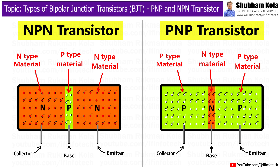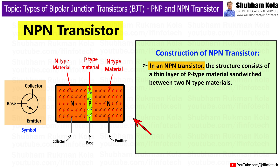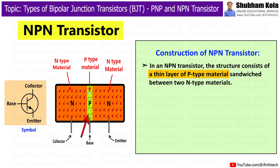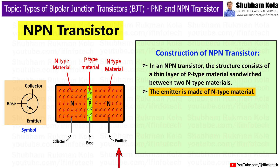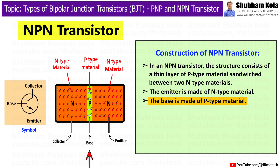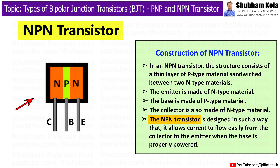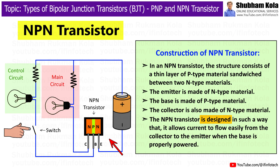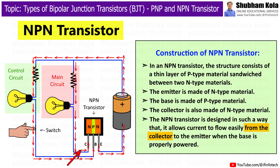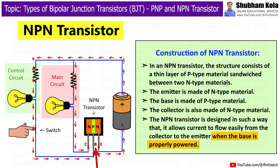Now let's look at the construction of NPN and PNP transistors. In an NPN transistor, the structure consists of a thin layer of P-type material sandwiched between two N-type materials. The emitter is made of N-type material, the base is made of P-type material, and the collector is also made of N-type material. The NPN transistor allows current to flow from the collector to the emitter when the base is properly powered.